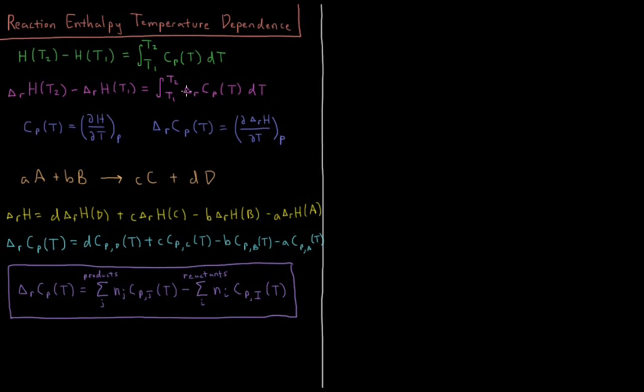So what is this value for the reaction change in constant pressure heat capacity? That's equal to the partial derivative of the reaction enthalpy with respect to temperature at constant pressure. So how do we calculate this specific value?